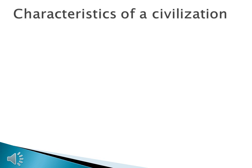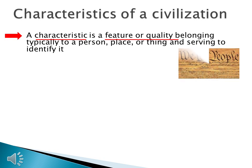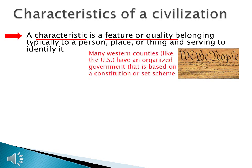Now that we've defined the term civilization, let's look for characteristics found in most civilizations. A characteristic is a feature or quality belonging typically to a person, place, or thing that serves to identify it. For example, the United States Constitution organizes our government and limits how it will operate — we've written down the laws regarding how our government runs. That is a characteristic found in many modern Western countries like the United States, Canada, Germany, Great Britain, and Australia, which have all written down how their government will be organized.